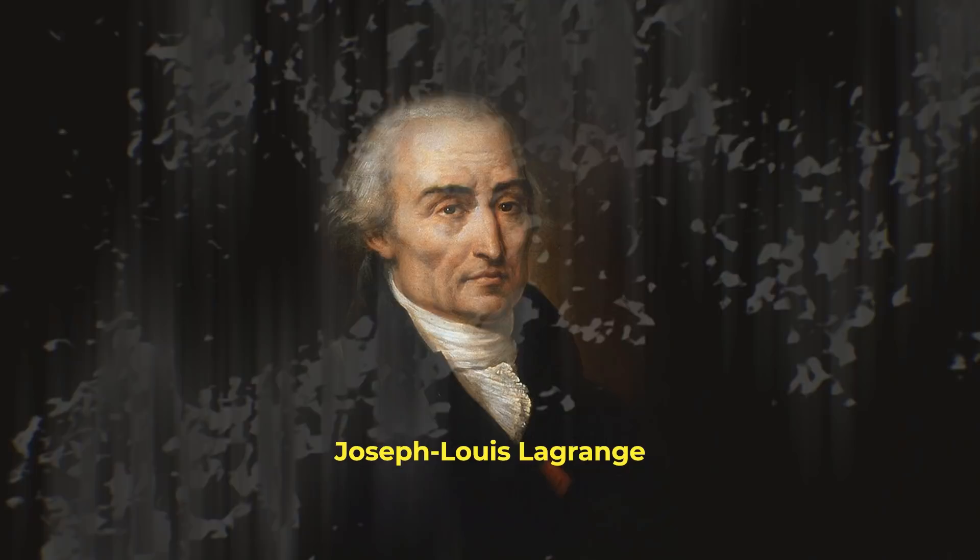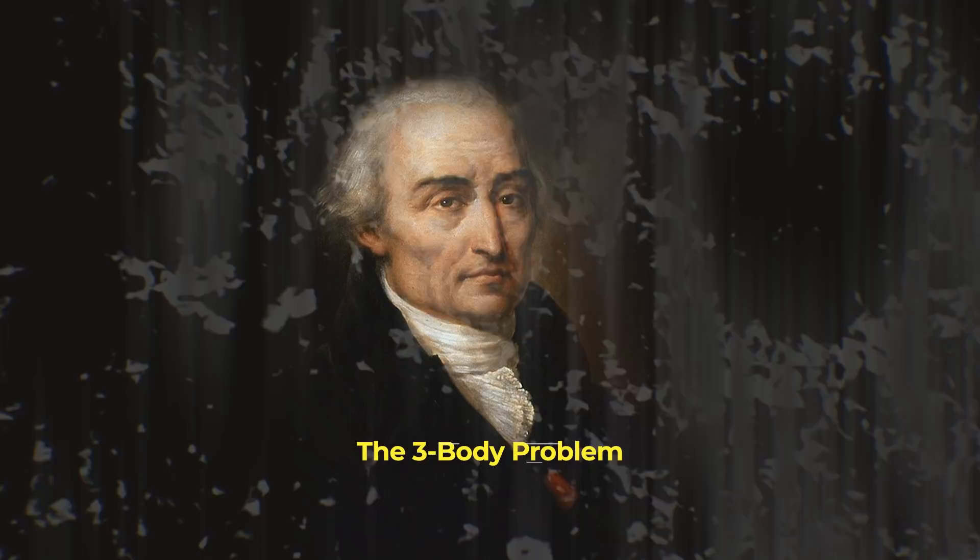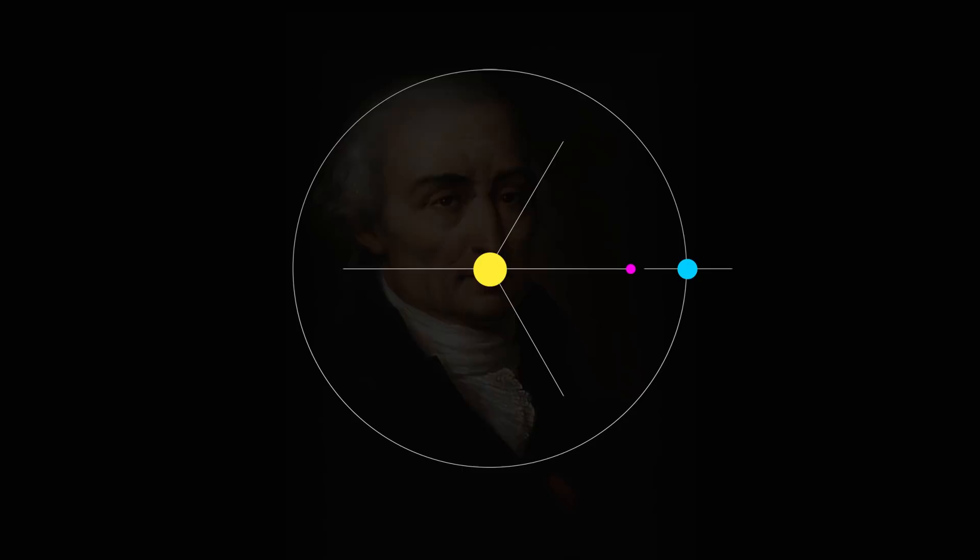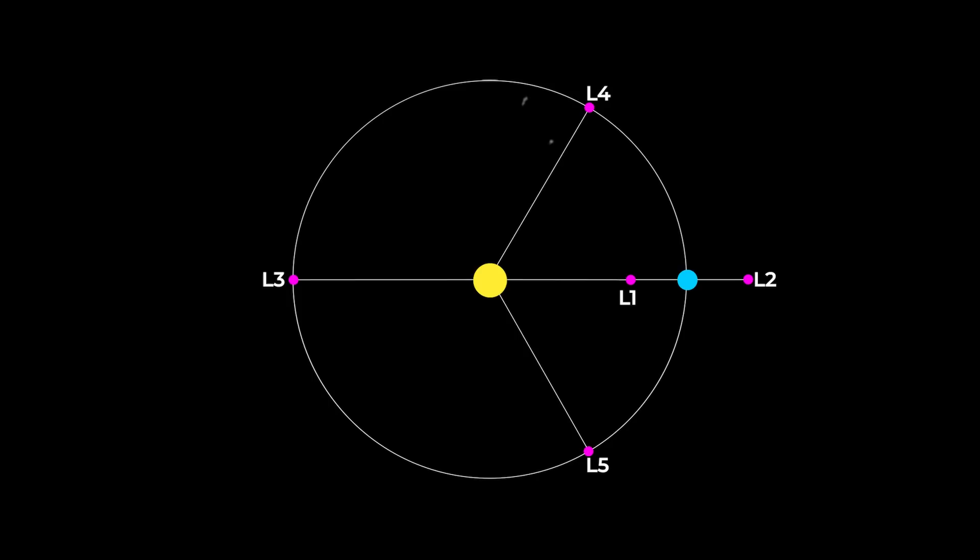These points are named after Joseph Louis Lagrange, an 18th-century mathematician who wrote about them in 1772 in a paper called the Three-Body Problem. They are also known as libration points and Lagrangian points.